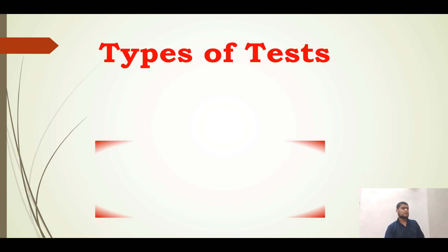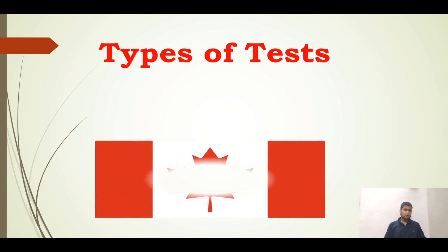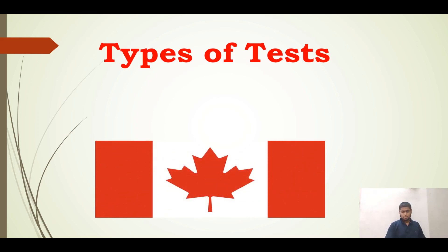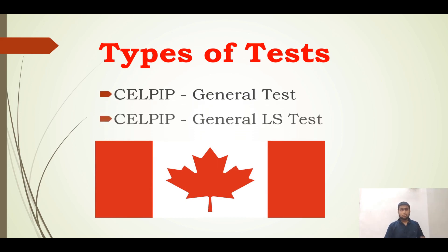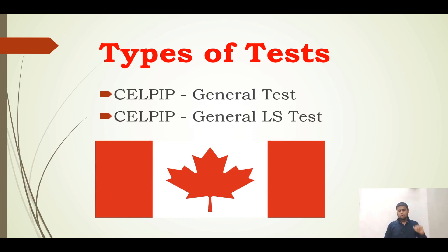Now let us talk about the types of the test. As I mentioned at the beginning, this test is exclusively for Canada, and for that matter it has been divided into two types. The first one is the CELPIP General Test and the second one is the CELPIP General LS Test.